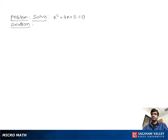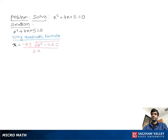Solve x squared plus 4x plus 5 equal to 0. Using the quadratic formula, x equals negative b plus minus square root of b squared minus 4ac over 2a.